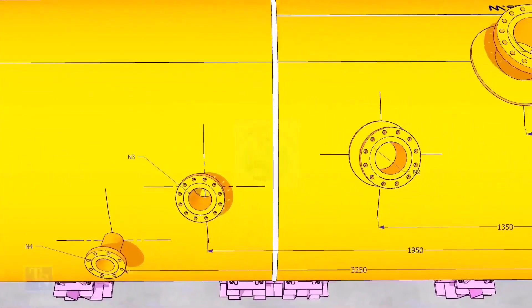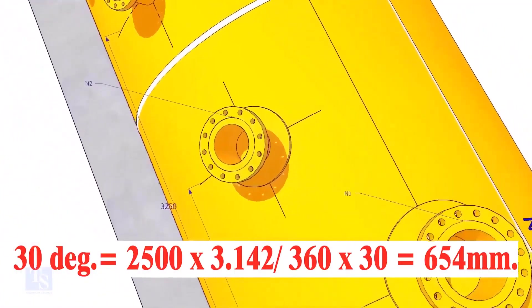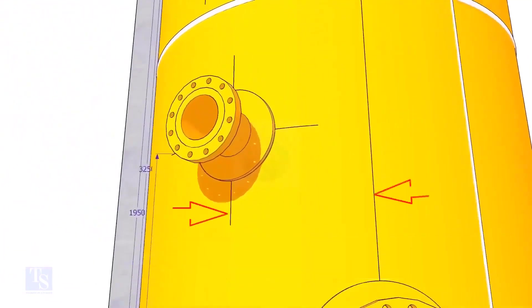So let us mark the center of nozzle N2. It comes on 30 degree anti-clockwise. Convert 30 degree to arc length. Mark this dimension at two locations as shown and draw a line.